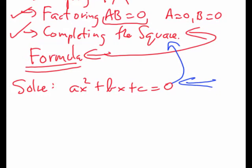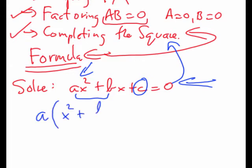So the process of completing the square: first, the constant term c has to go to the other side. And if there's a coefficient to the x squared, it needs to be factored out. So I'm going to factor out a, and that's going to give me x squared plus b over a times x. Then when I complete the square, I know that has to be some special number so that those three terms factor perfectly. But if I add something on, I've got to take it away as well, and I'm bringing the constant c to the other side.